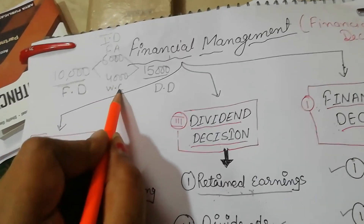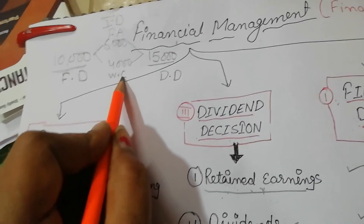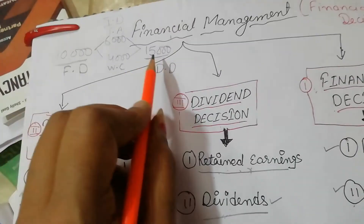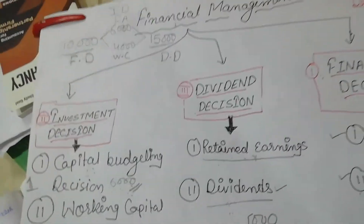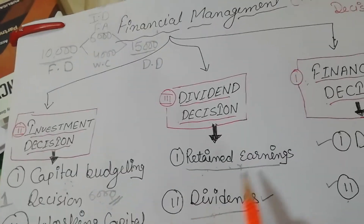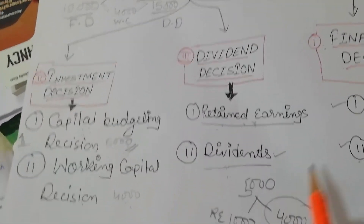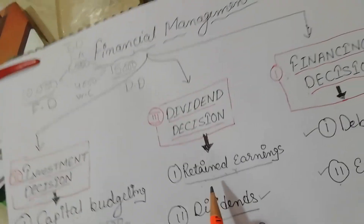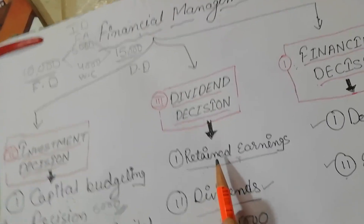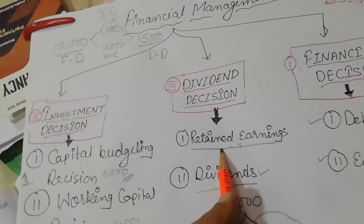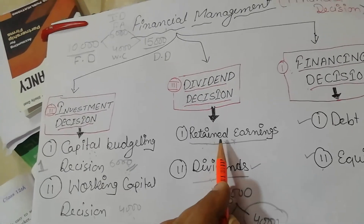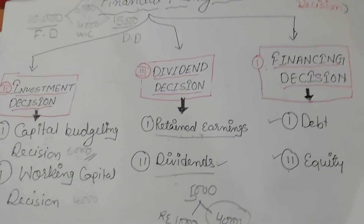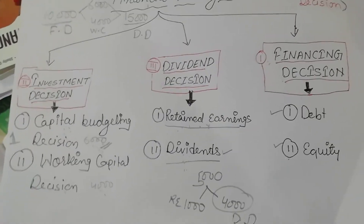Second, Investment Decision — where the money will be invested. Third, the Dividend Decision — what will we do with the profit? How much dividend will we declare? How much will we keep as retained earnings? We will understand this clearly in the next video. Thank you.